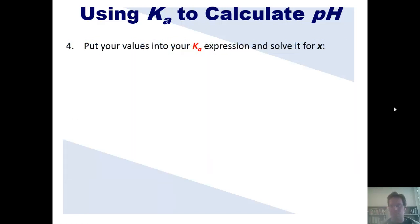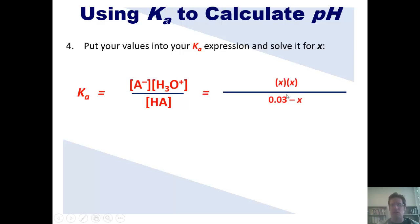Four, put your values in your Ka expression and solve it for X. In this case, we've got our Ka expression being here, which I showed you a few moments ago. I set that equal to my X values. My X values for A-minus and H3O-plus, or each X. My basement or denominator concentration was 0.03 minus X. We good? Okay, now here's a tip.